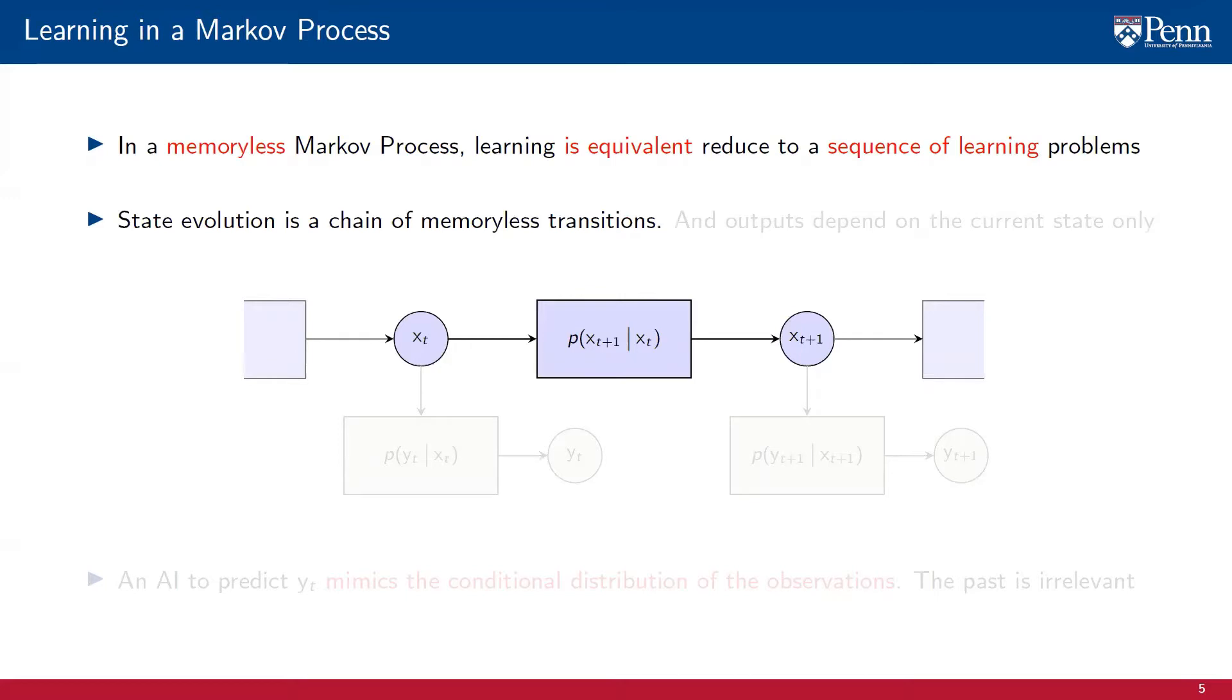To see that this is true, note that the evolution of the state of the process, x of t, is a chain of memoryless transitions. That is, at every time step, the transition from x of t to x of t plus 1 depends only on the current value of the process. The past is irrelevant. Moreover, the outputs of the process, yt, depend only on the current state of the process. The output yt depends only on the state xt. The output yt plus 1 depends only on the state xt plus 1.